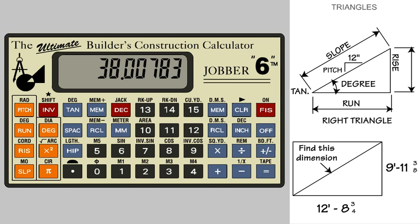Now all the input or calculated values for this triangle can be recalled and reviewed simply by pressing the various keys. The Jobber 6 will solve right triangles in a similar manner in all six of the different dimensional modes.